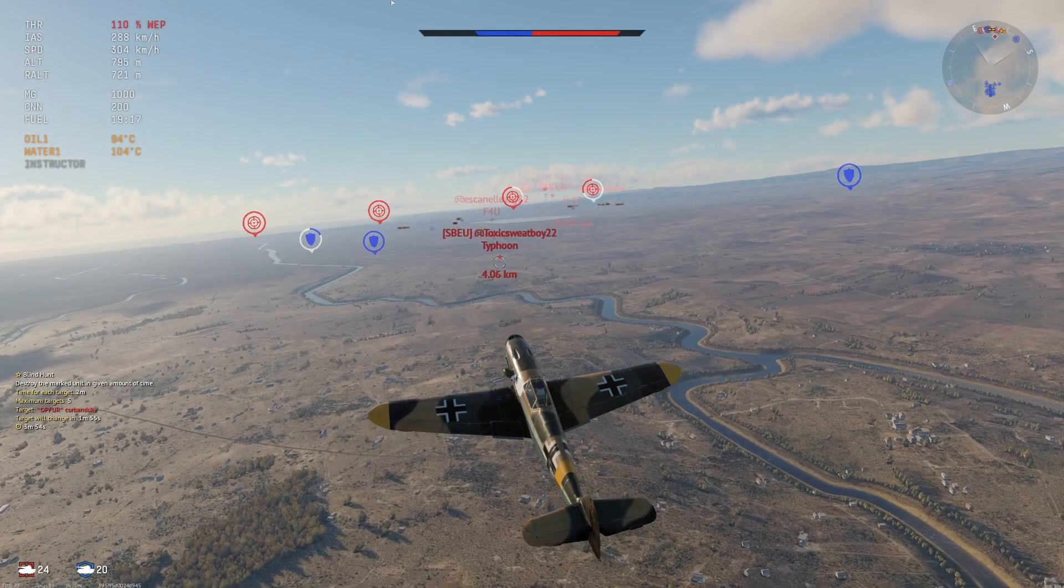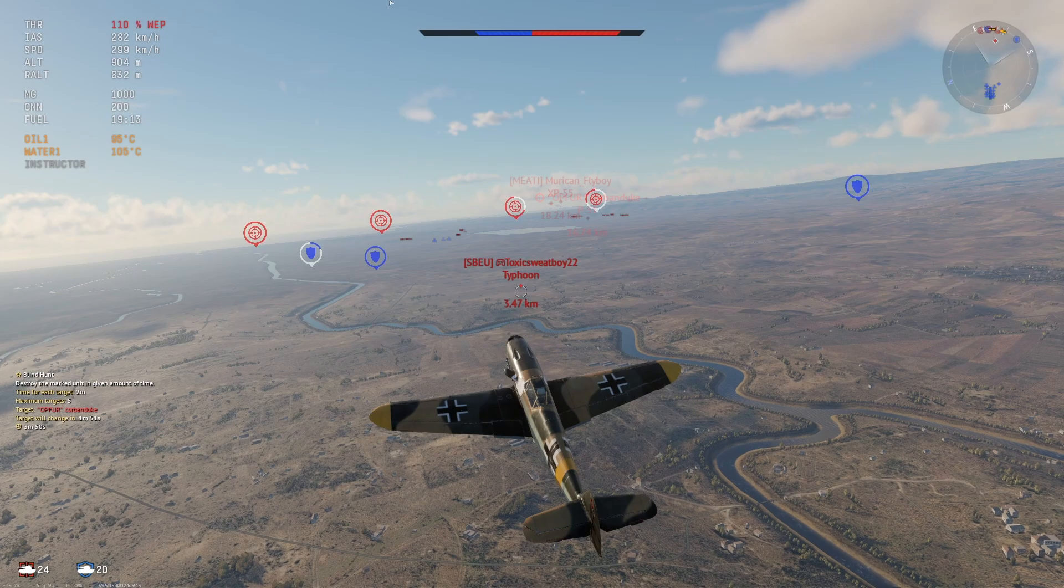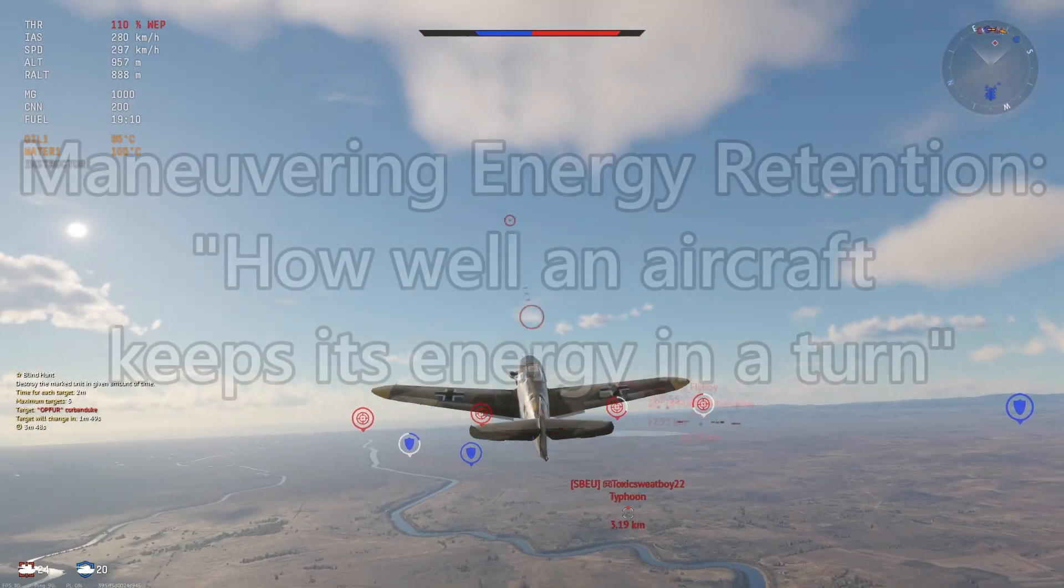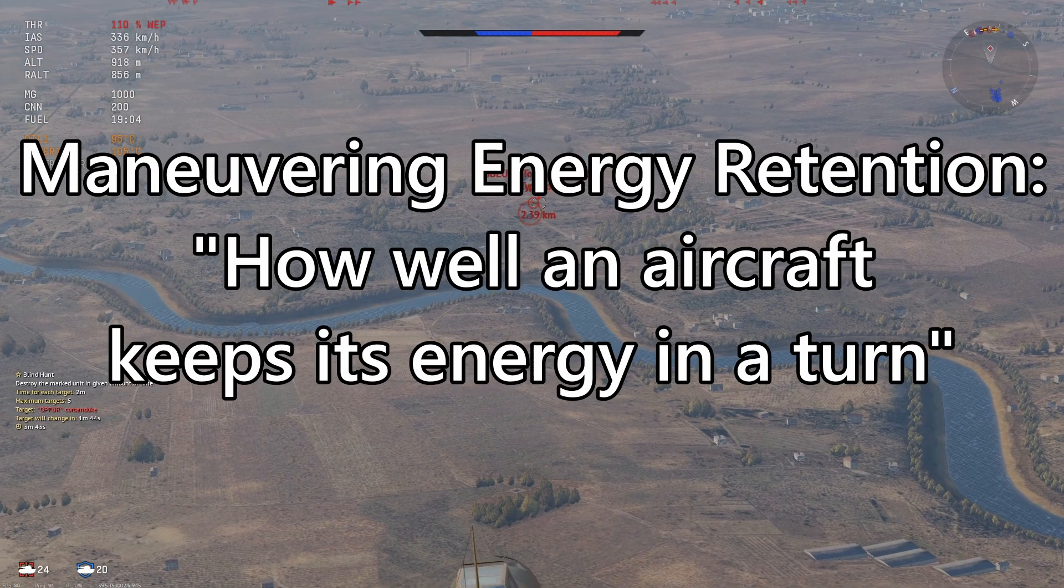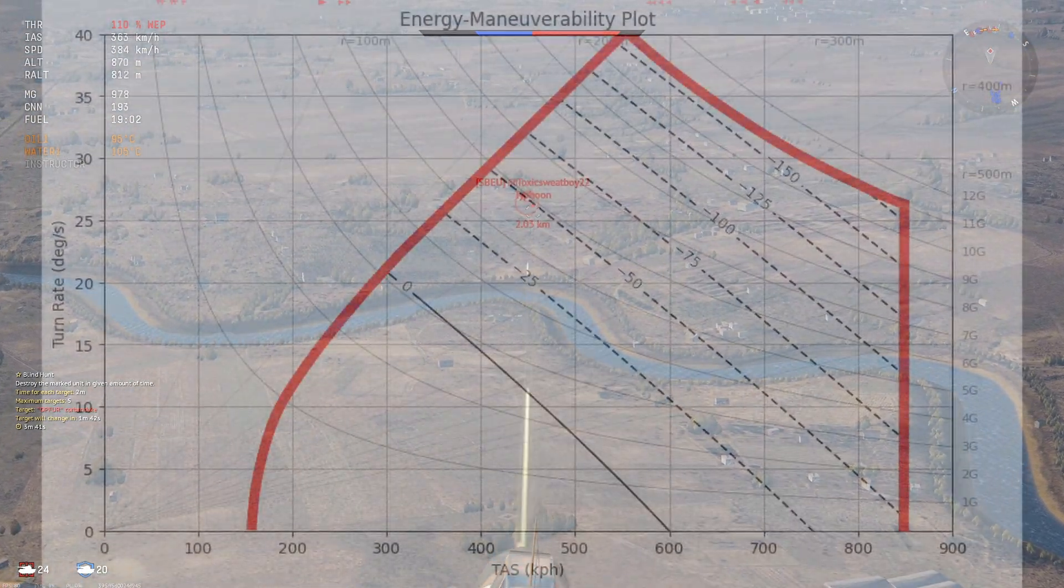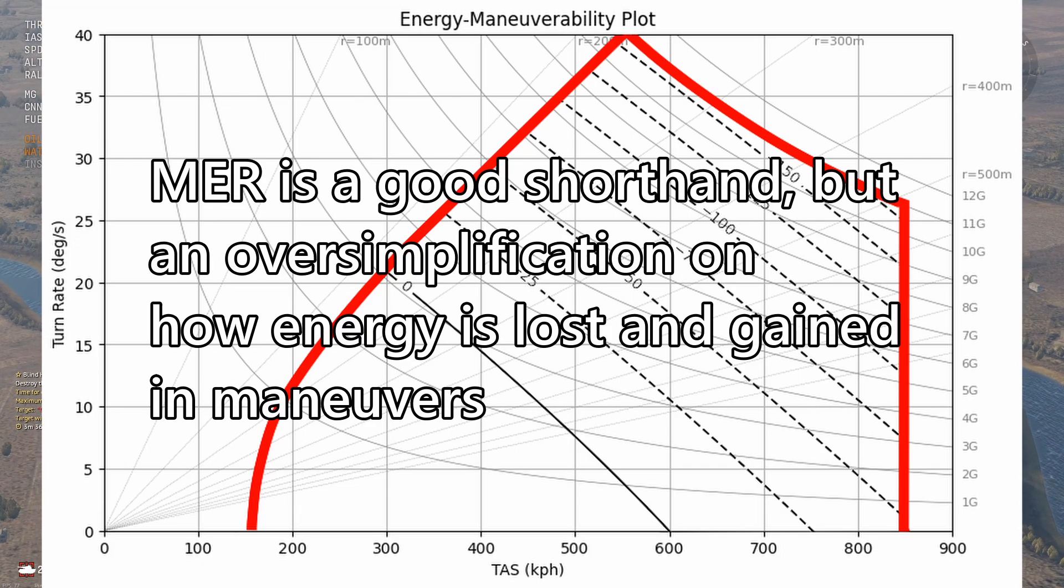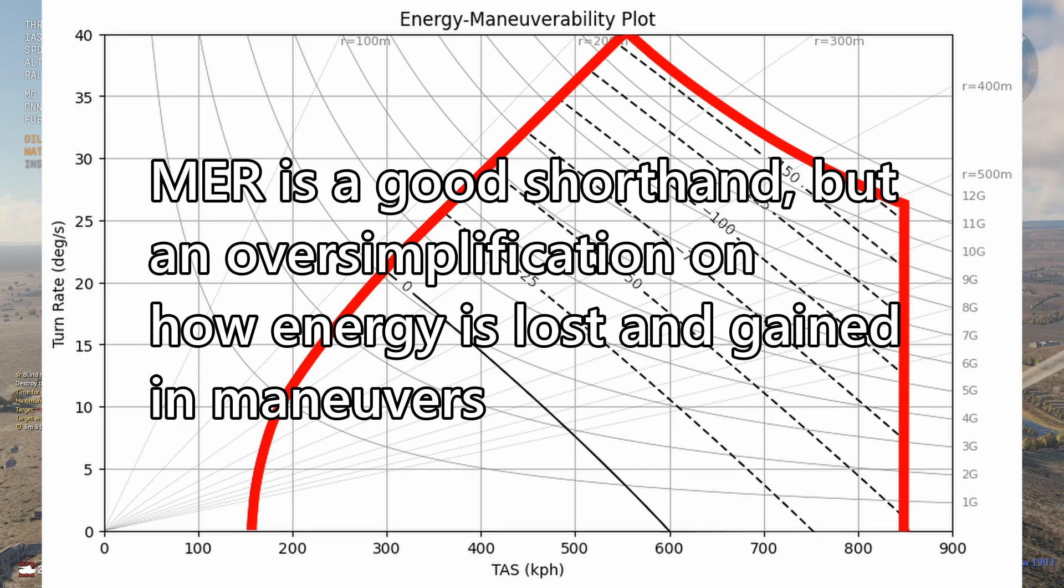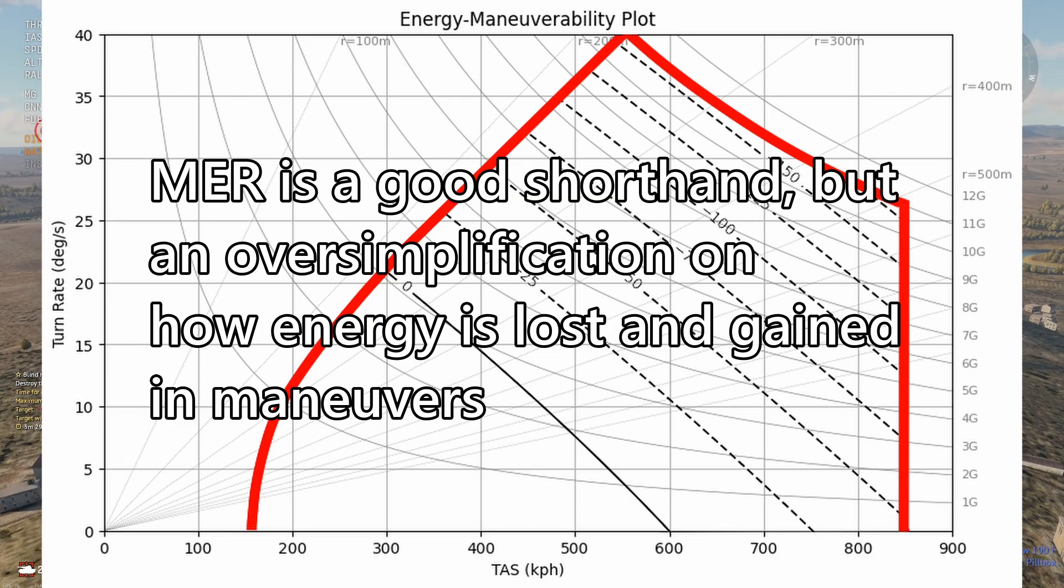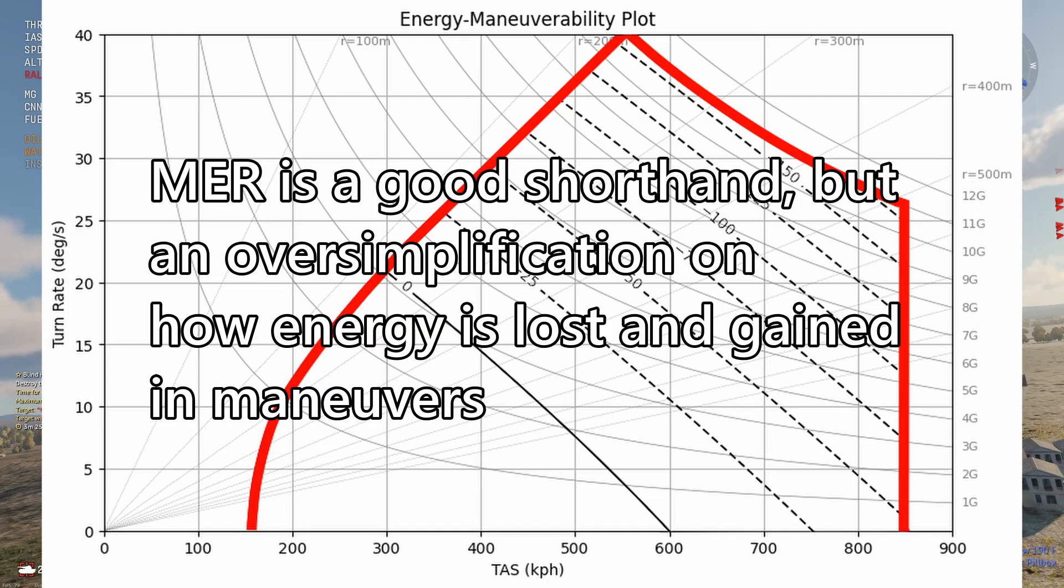Specific excess power in the EM diagram also helps to describe maneuvering energy retention. The way maneuvering energy retention is usually defined is that it's how well an aircraft maintains its energy in a turn. You can see now from the EM diagram though that saying a plane's maneuvering energy retention being good or bad is a rather gross oversimplification. That can be good as a quick shorthand for telling people an aircraft's general flight characteristics.